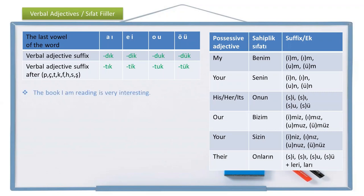Let's see an example: the book I am reading is very interesting. The noun is the book, but I'm talking about the book I'm reading. First, the noun: kitap. The verb is read — oku. I add the verbal adjective suffix -duk, but the k alternates to soft g due to consonant alternation. Then I add the possessive adjective suffix -um: okuduğum kitap — the book I'm reading. It's very interesting — çok ilginç. As you see, first write the verb, add the verbal adjective suffix, then the possessive adjective suffix, because this book is read by me.